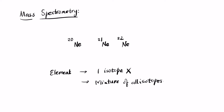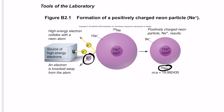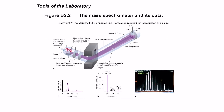In mass spectrometry, we hit the neon gas with a powerful source of high-energy electrons. When hit with these electrons, one of the electrons gets knocked out, causing the atom to become positively charged. We then pass those positively charged ions through an electric field and a magnetic field.